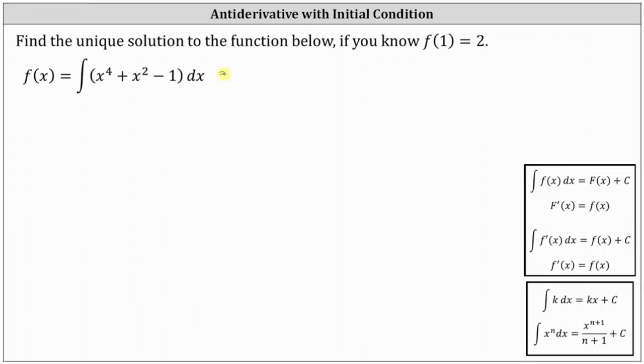The antiderivative is equal to x to the fifth divided by five plus x to the third divided by three minus x plus c.